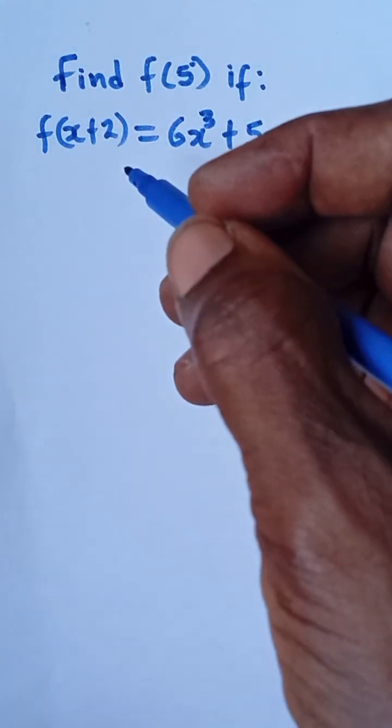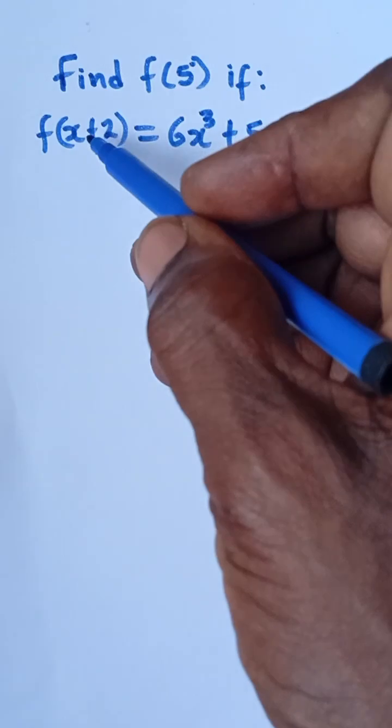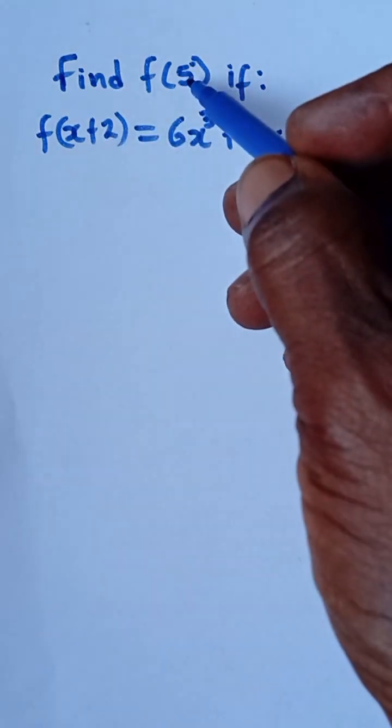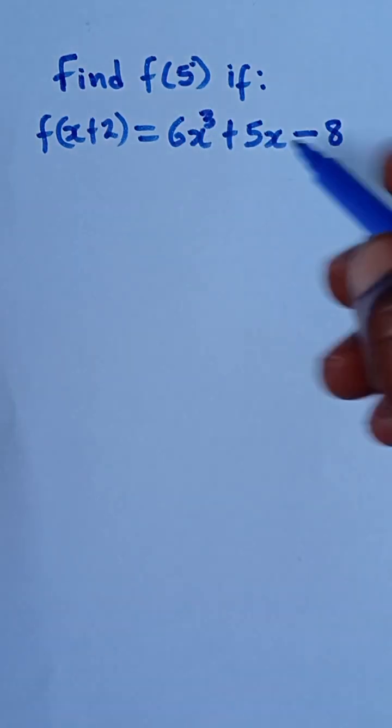Now, to solve this, what we need to do is first equate x plus 2 and 5, so that we'll get a value that we'll put inside this expression.